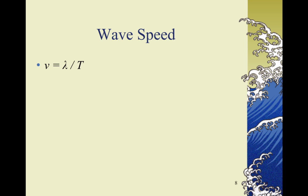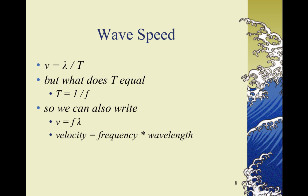So if velocity is equal to wavelength divided by period, what does t equal? Well, t is equal to 1 divided by the frequency. So if we plug that in, we can rewrite the equation to be v is equal to f lambda, or velocity is equal to frequency times wavelength.